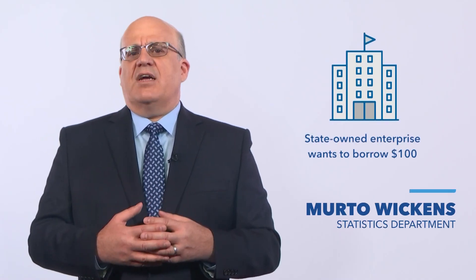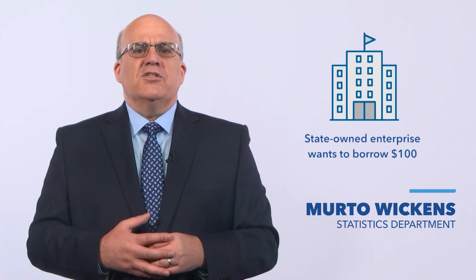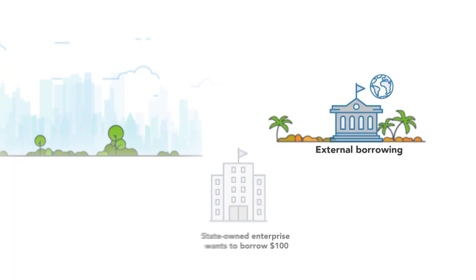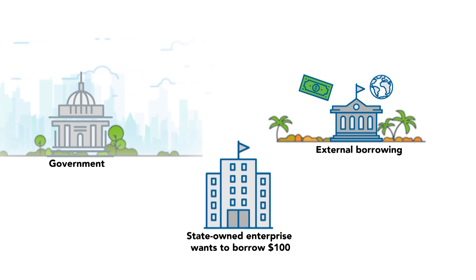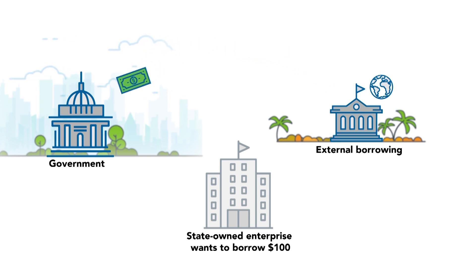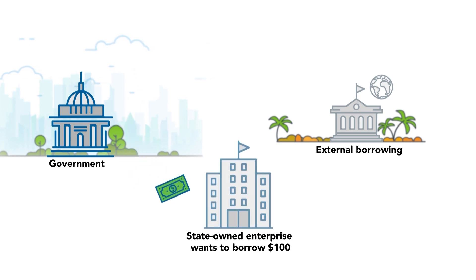Let's say a state-owned enterprise wants to borrow $100 to finance some of its investment activities. External borrowing would have been much cheaper for the state-owned enterprise, but it's not allowed to borrow abroad. So instead, government borrows $100 on behalf of the state-owned enterprise from a bank abroad, and then government on-lends these proceeds to the state-owned enterprise.